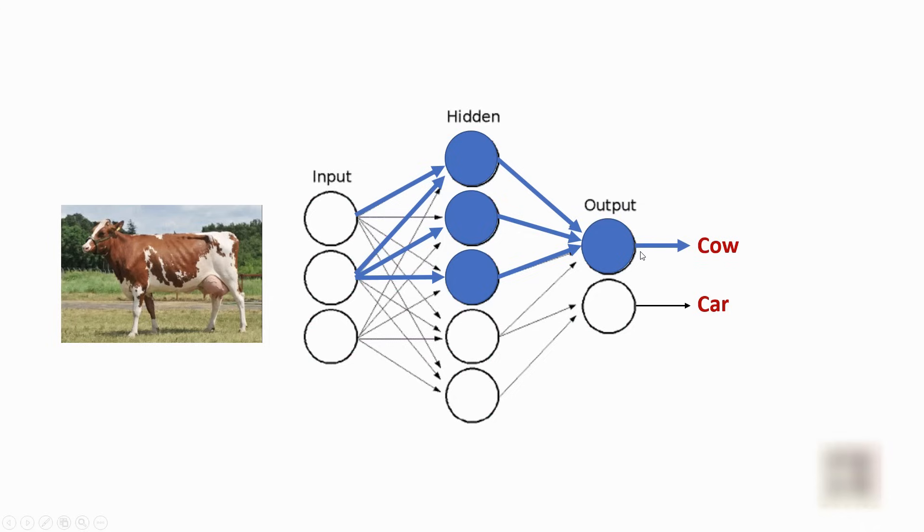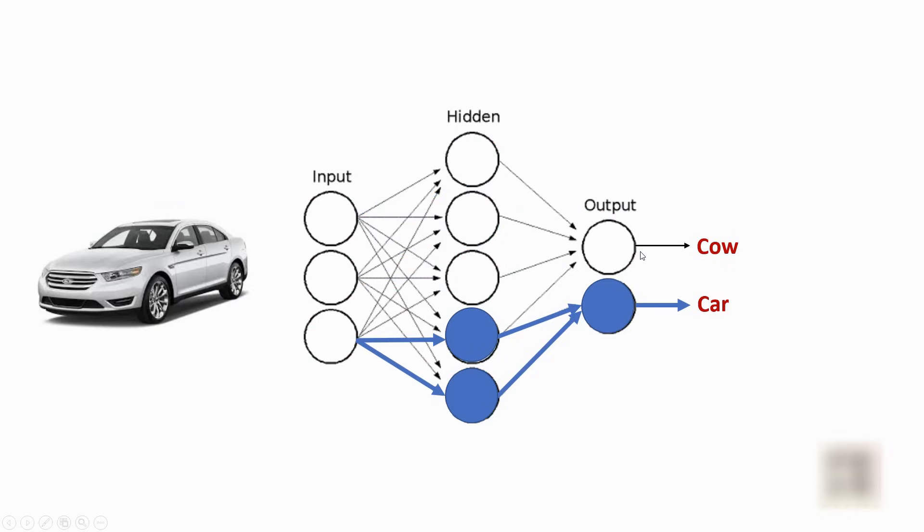Similarly, when a baby is seeing a car, you will tell her that this is a car and some other set of neurons will light up. The edges will become stronger and so forth. This way you are training a baby.